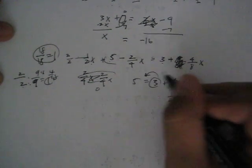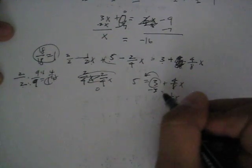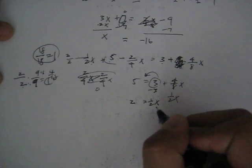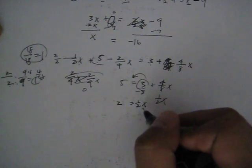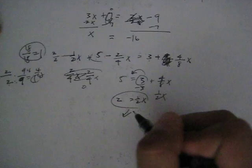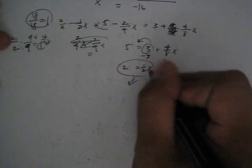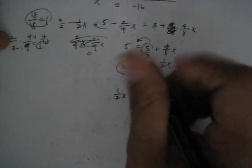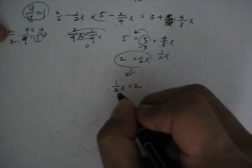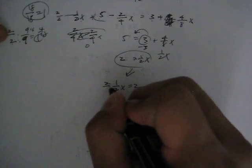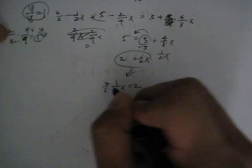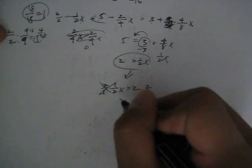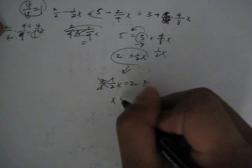We want to move the 3 over, so we subtract by 3. 5 - 3, which is 2, equals 1/2x. If you want to isolate x, let's put this into more familiar terms. 2 = 1/2x is the same as 1/2x = 2. To get rid of this, we multiply both sides by 2. 2/1 times 1/2x = 2 times 2/1. Cross multiply and you have x = 4.